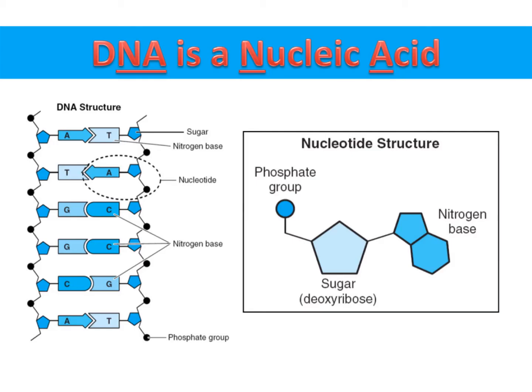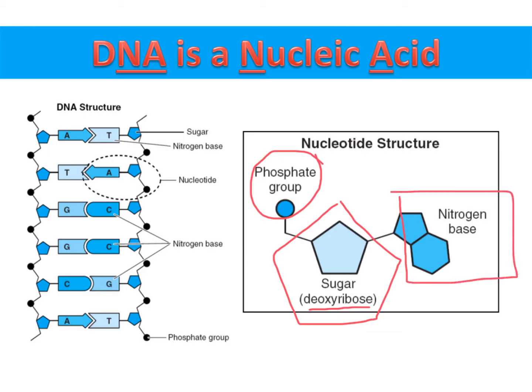DNA is a nucleic acid, and as we learned in our biomolecules unit, nucleic acids are polymers of nucleotides. Each DNA nucleotide has three parts which contribute to the structure and function of the DNA molecule. They are the phosphate group, a sugar — which is always deoxyribose in DNA — and one of the four nitrogen bases.